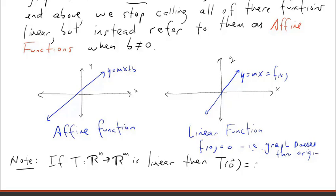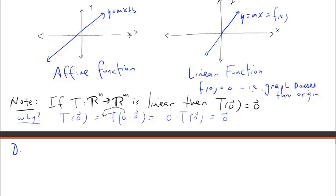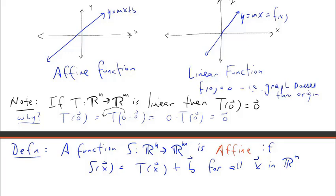If T from Rn to Rm is linear, then automatically T of 0 must equal 0. Why? Because T of the zero vector equals T of the scalar 0 times the zero vector, and by homogeneity that equals 0 times T of the zero vector, which is the zero vector. Here's the formal definition: a function S from Rn into Rm is affine if S of x equals T of x plus some constant vector b for all x in Rn, where T is a linear transformation.